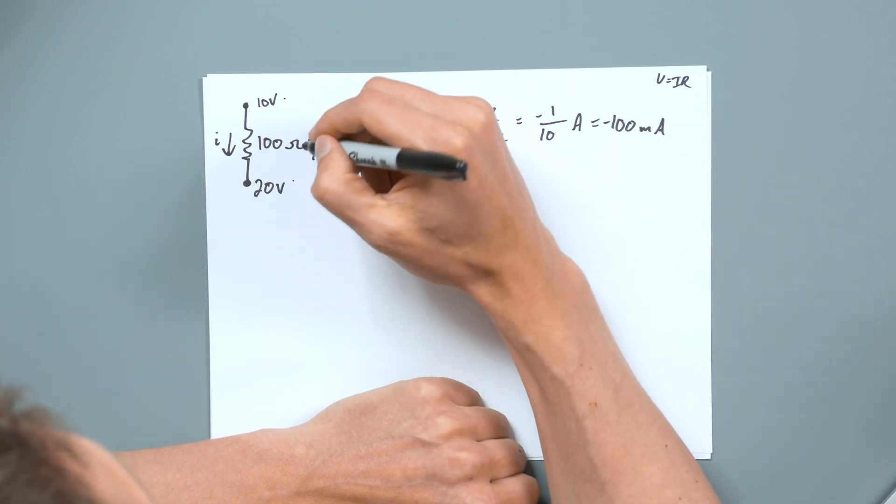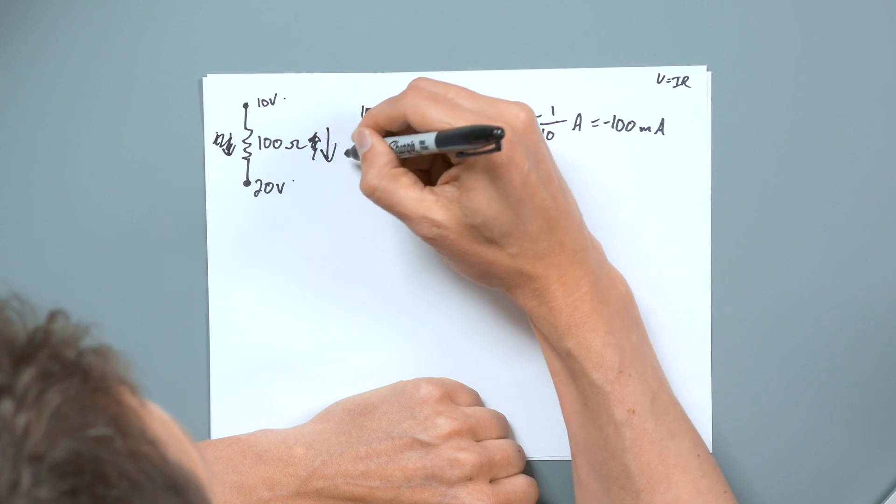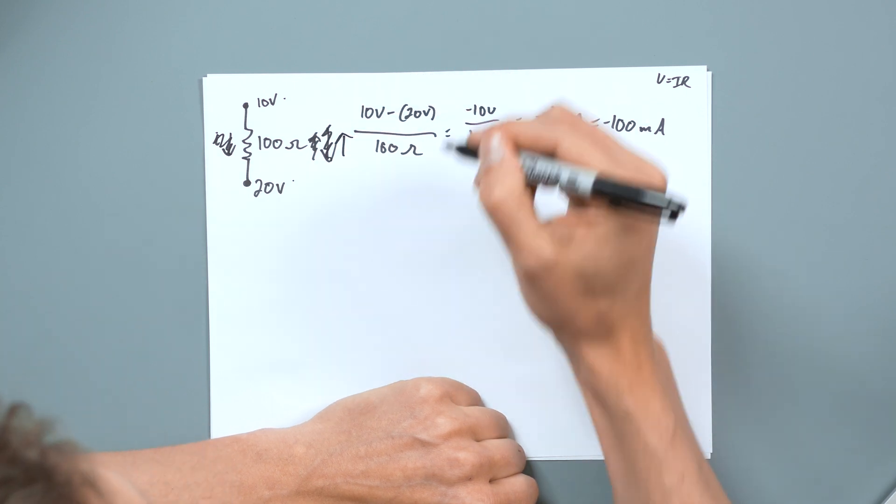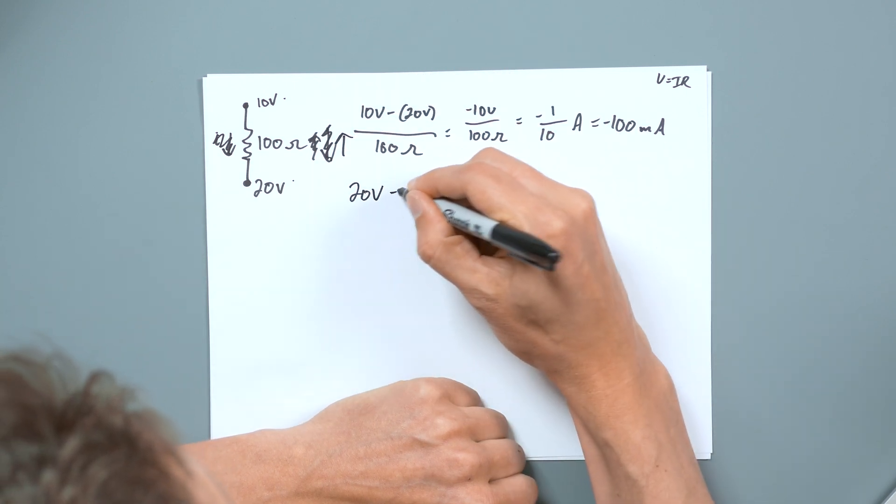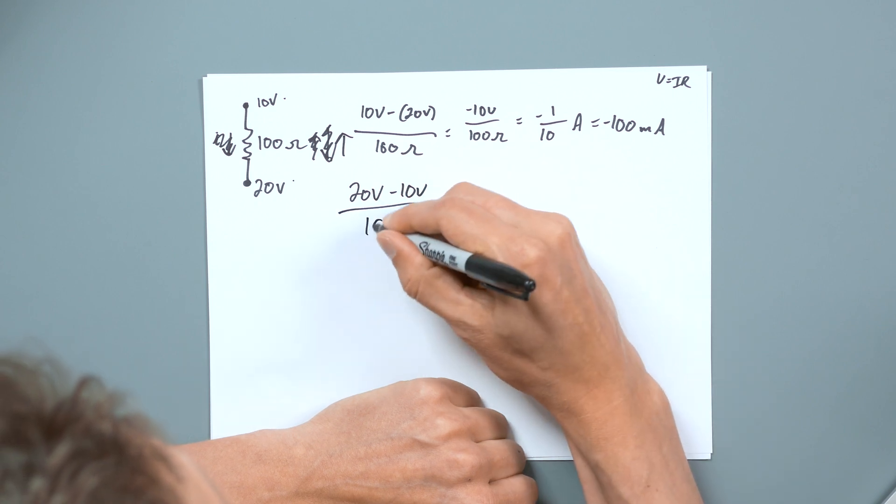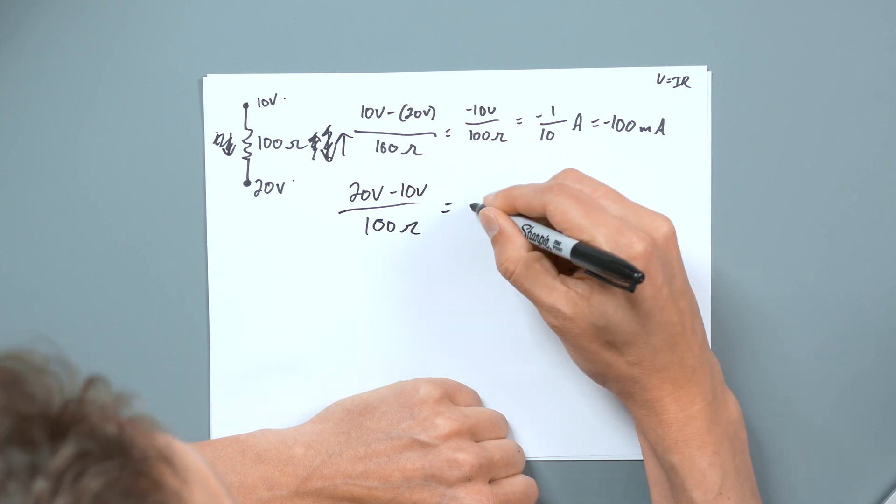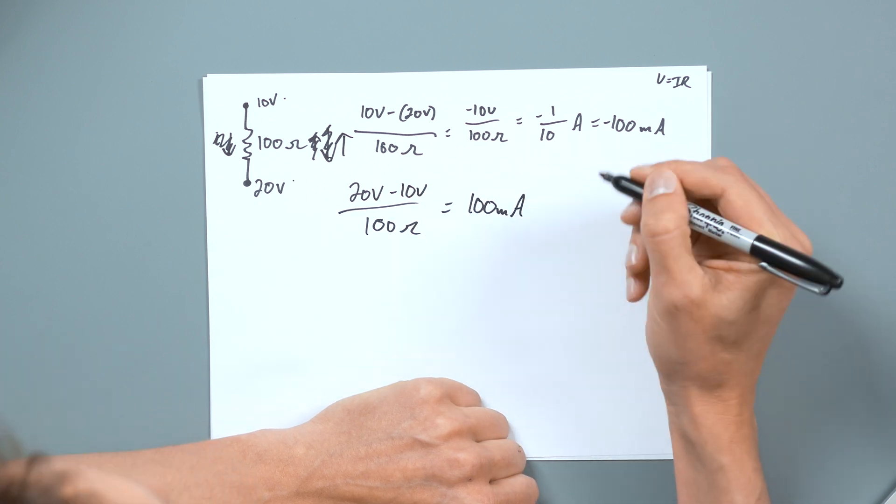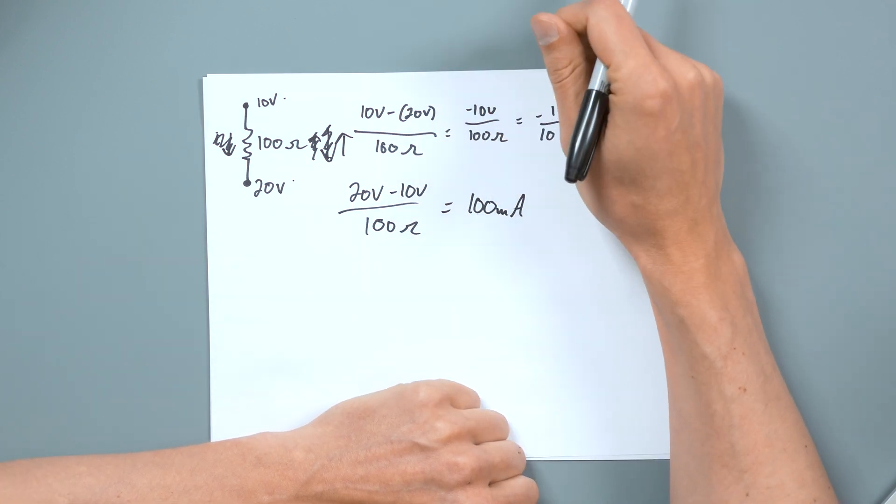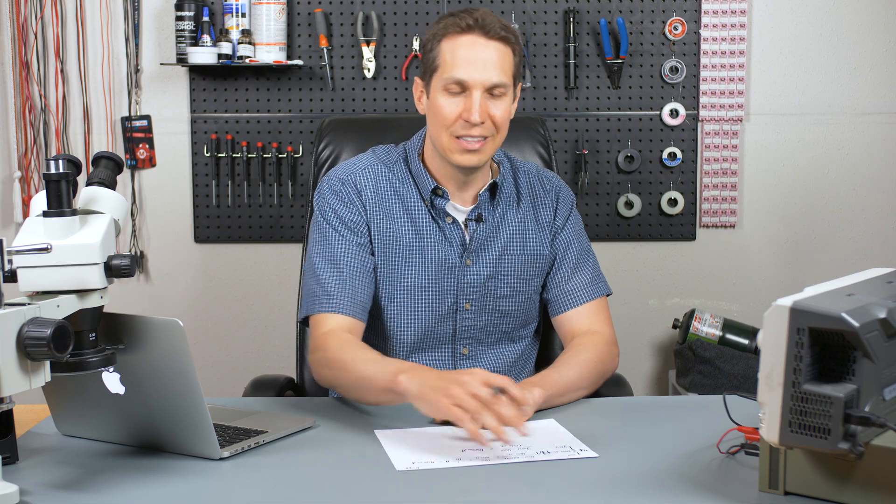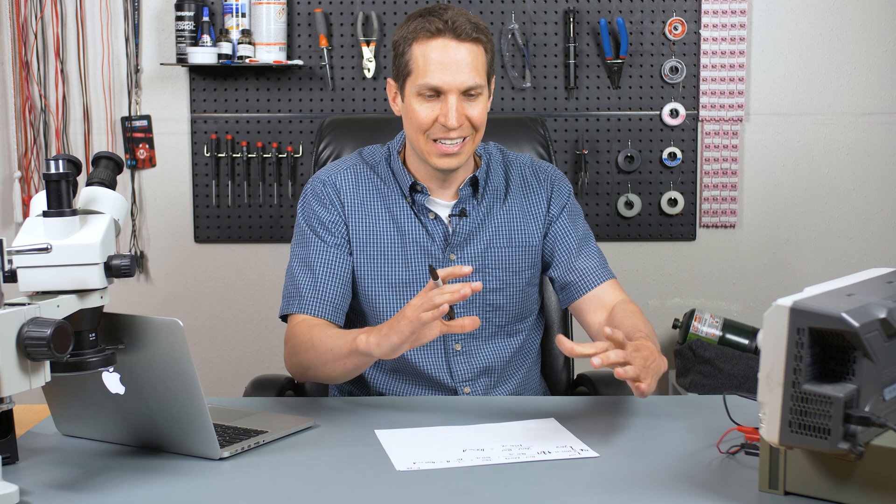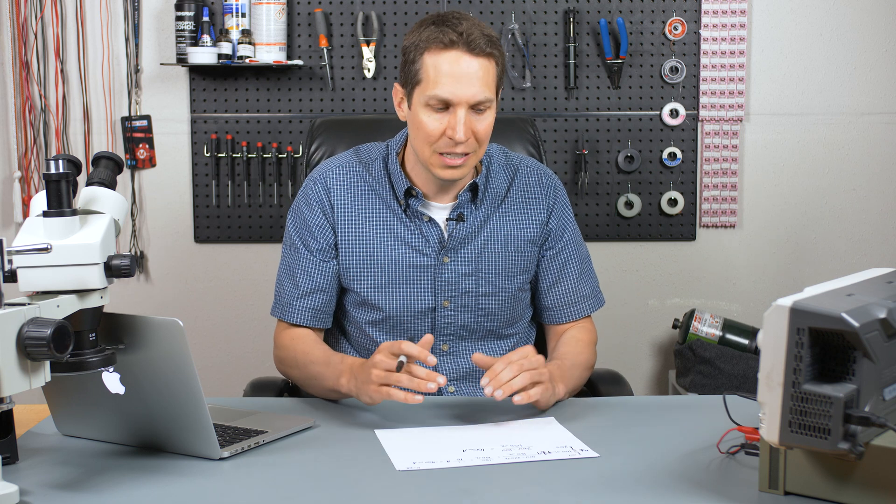Because if I take this and I switched it, and I did all the math differently and went back up, then it would be okay, 20 volts minus 10 volts over 100 ohms. And then I'm going to get 100 milliamps, but it's going to be in the opposite direction. So that was the key with this one that I want you to take away is that that positive and negative is a matter of perspective. It's a matter of which way you're looking at it.